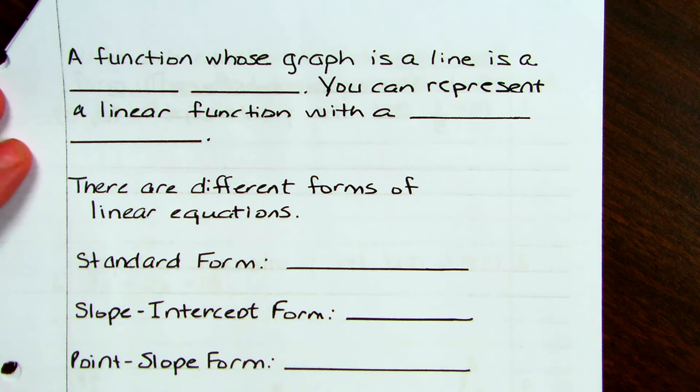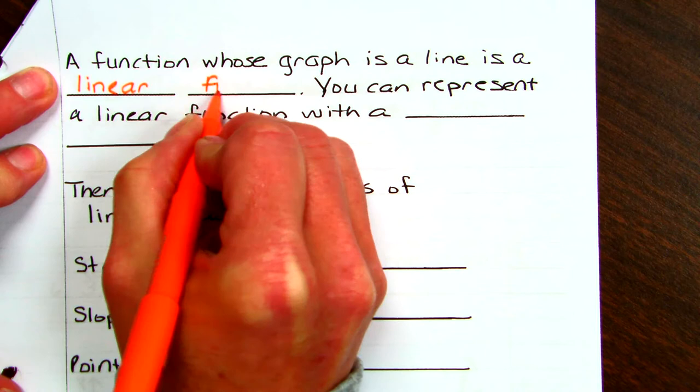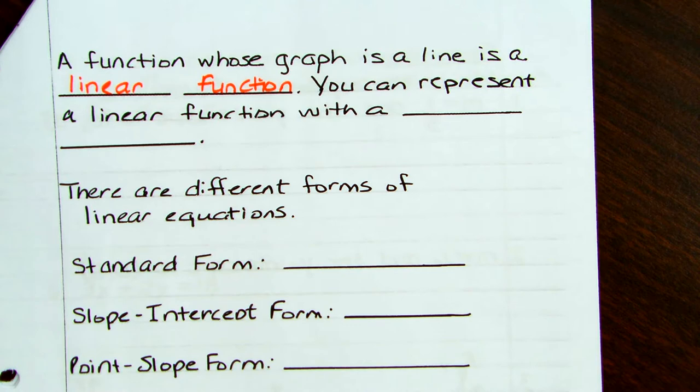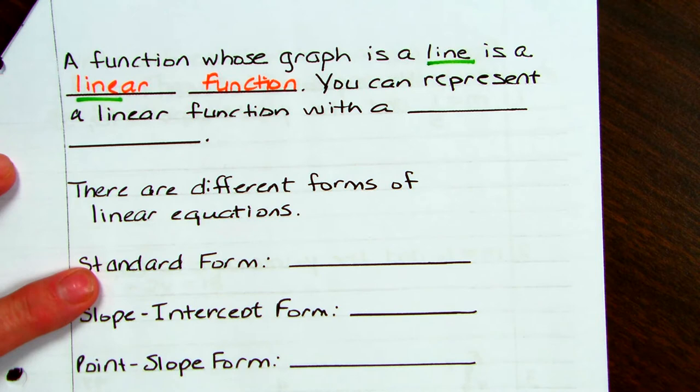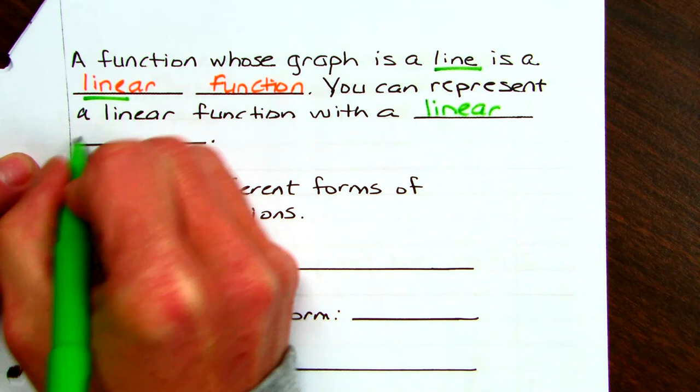Some more terminology: a function whose graph is a line is a linear function. One way to remember that is to see the word 'line' in the word 'linear.' So the graph of a linear function is a line. You can also represent a linear function with a linear equation.